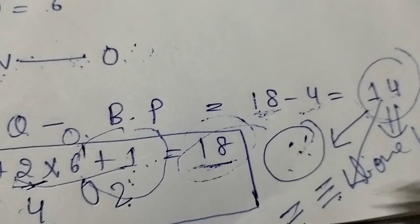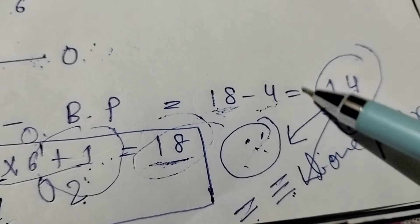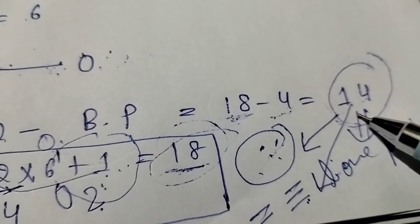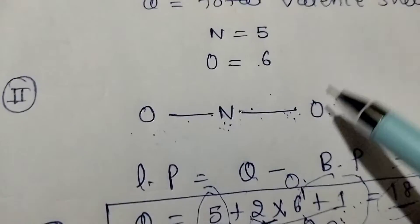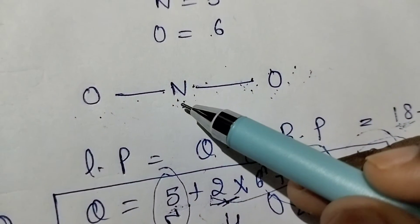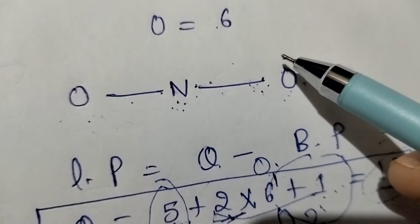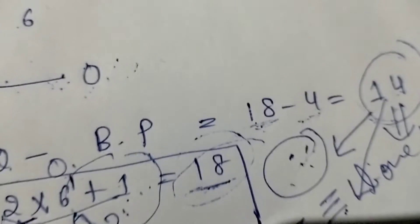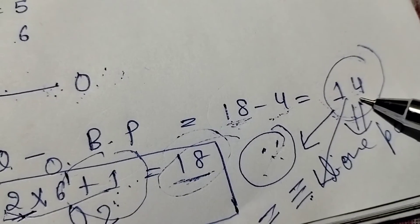Okay, simply how many lone pairs? It will be 14. Simply, we will just draw lone pairs on corner atoms, not central atom. We will start it, just put the whole electrons, the whole lone pair number.